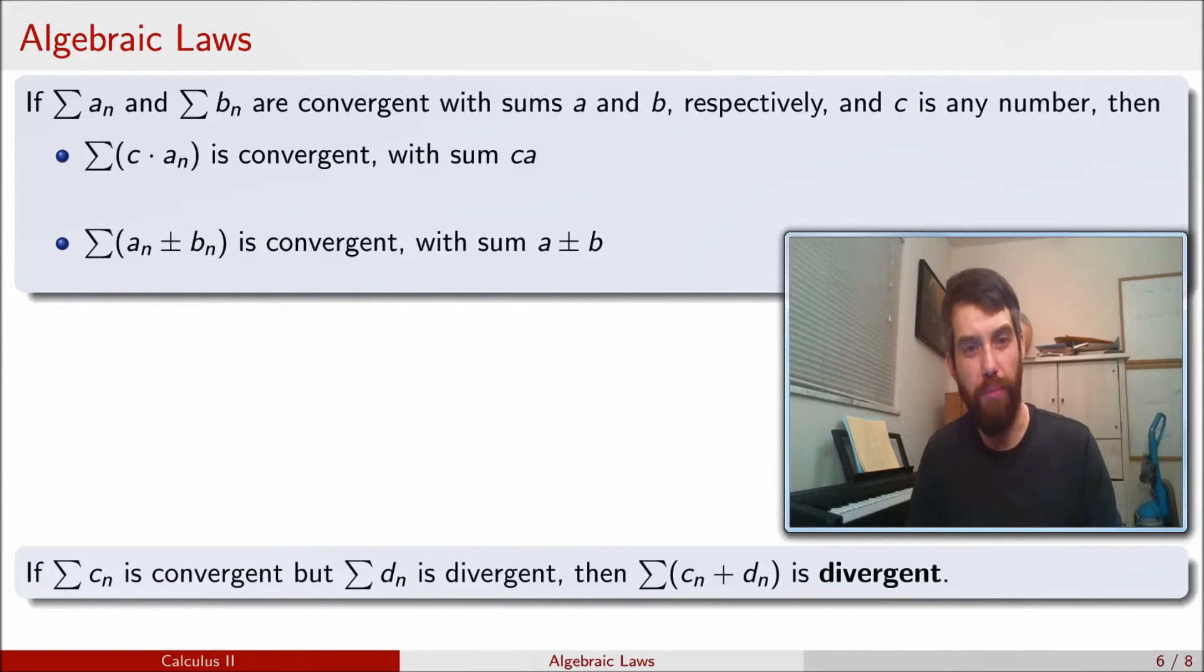It's worthwhile to note one point, which is that if you have a sum of those two different things, then if one of them diverges and the other converges, the sum of the two things is going to diverge. So you need to really have both of the things converging in order for it to converge.